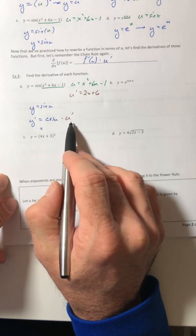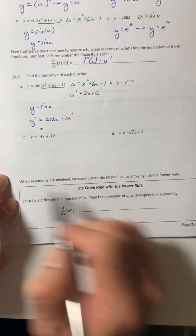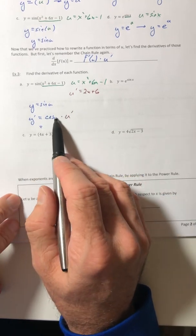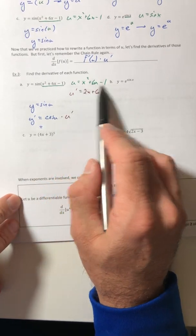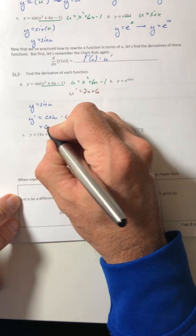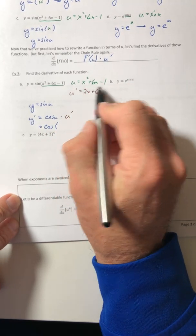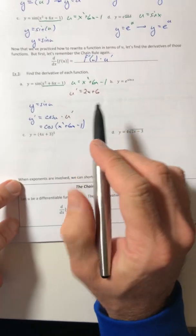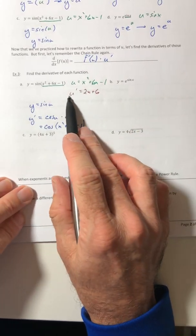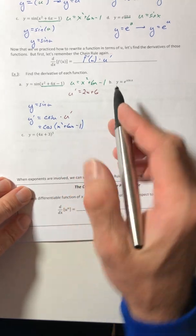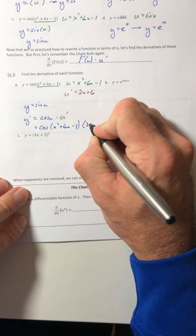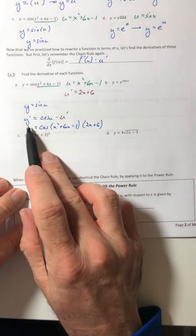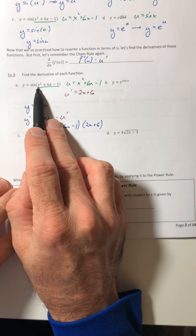So once I have this, then I can kind of just switch everything back into terms of x. So the u gets right back to what you started with. So x squared plus 6x minus 1. And then u prime is going to be 2x plus 6. And so that is the derivative of this function.